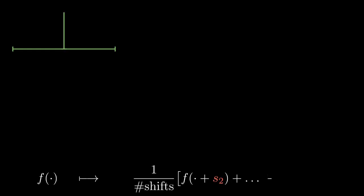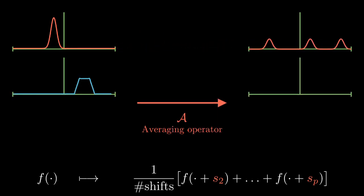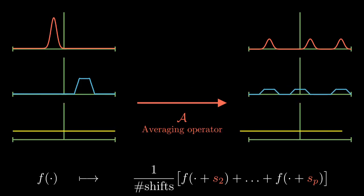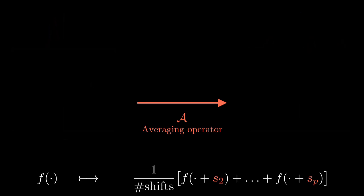Taking a distribution and averaging over different shifts can be considered as an operator on the space of distributions. This operator is what we call here the averaging operator. It acts like this. Note here that the uniform distribution or any constant function is fixed by this operator. In other words, the uniform distribution is an eigenfunction of this operator with eigenvalue 1.